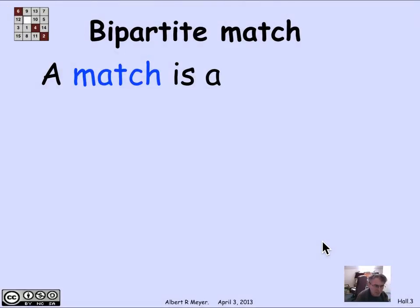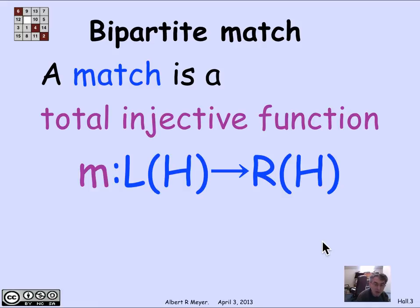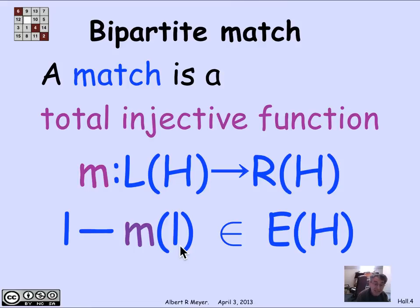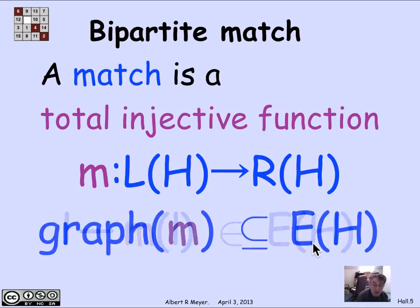Now we're interested in a matching in a bipartite graph. A match is a total injective function from the left vertices to the right vertices. That means every L vertex, or girl, has a match M of L that is on the other side. We need this total injective function, the match function M, to follow the edges. That simply means that the edge (L, M of L) is a legitimate edge of H. Another way to say that is that the graph of this total injective function is a subset of the edges of H.